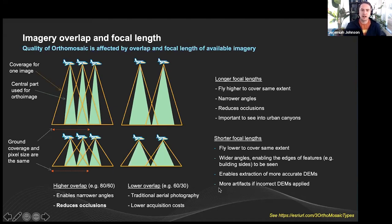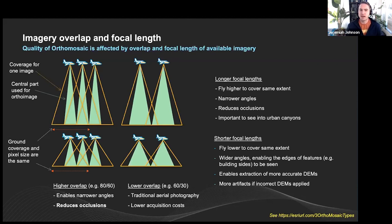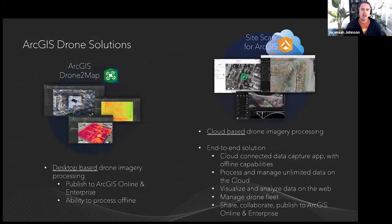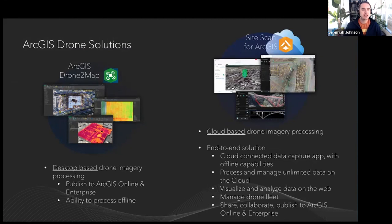When capturing thermal data — heat signatures and similar — you typically need even higher overlap to process it correctly. When collecting data from something like a DJI XT or XT2 sensor, you'll start to see 90–95% overlap as each picture captures its thermal radiometric data, which is then processed into thermal orthomosaics.